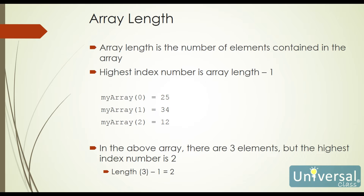Every array has a length, and the length is simply the number of elements contained in the array. By default, the highest index number of every array is going to be whatever the length of the array is minus 1. So in this array that we declared in the prior slide, you'll notice that we go from index numbers 0, 1, and 2. The reason that we end up with 2 is because the length of the array is 3 — there are three elements, but we subtract 1 and get 2.